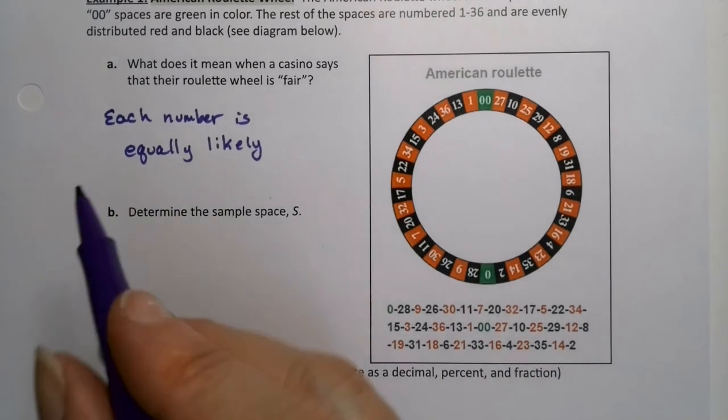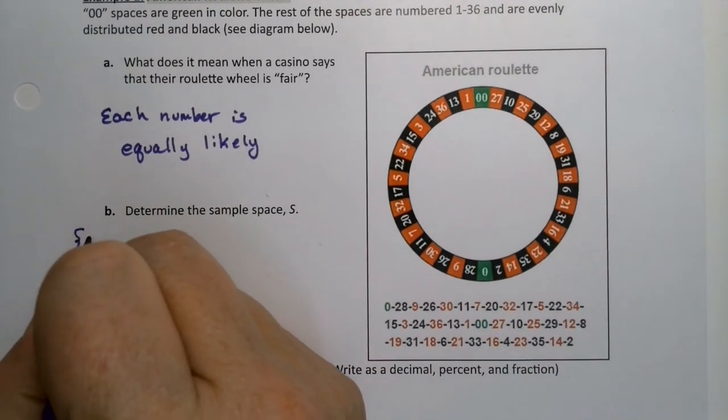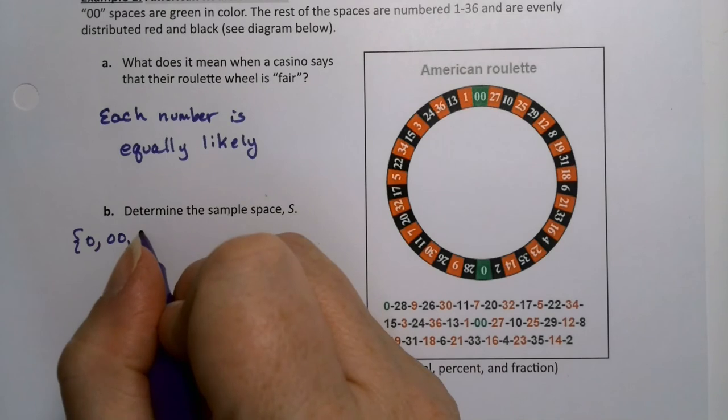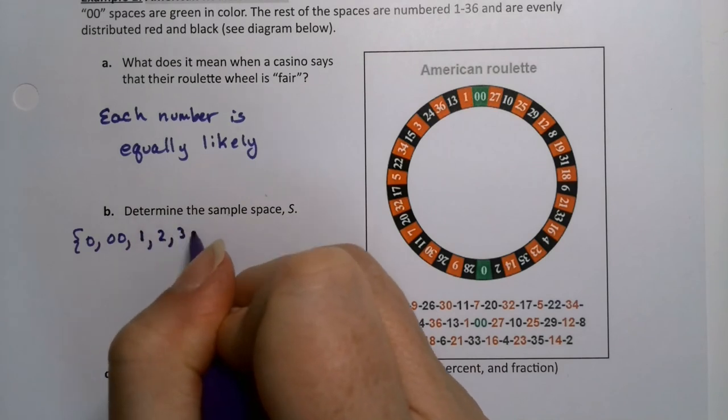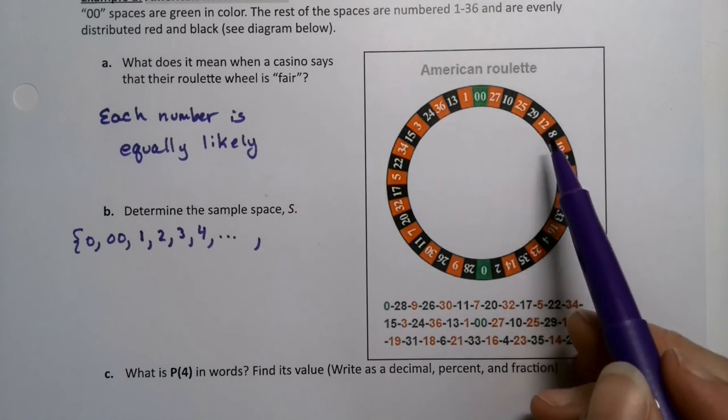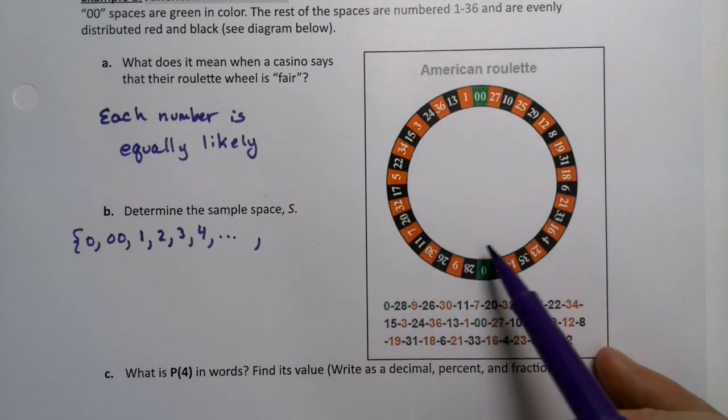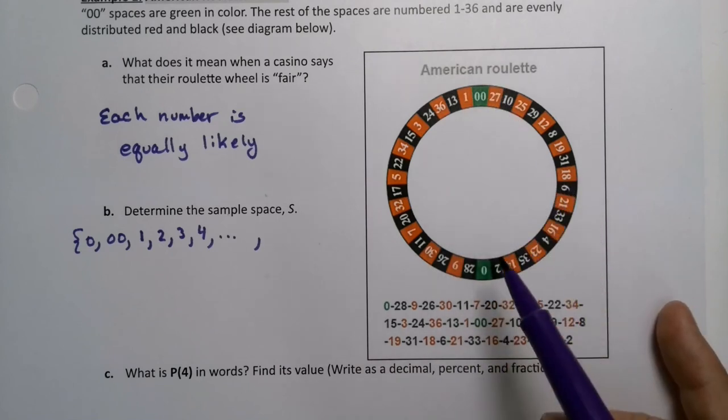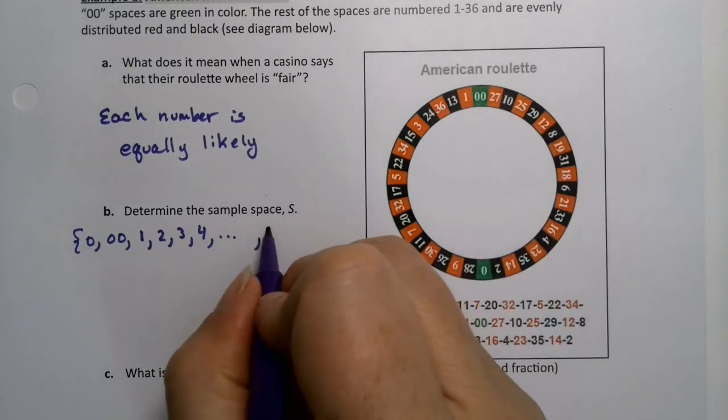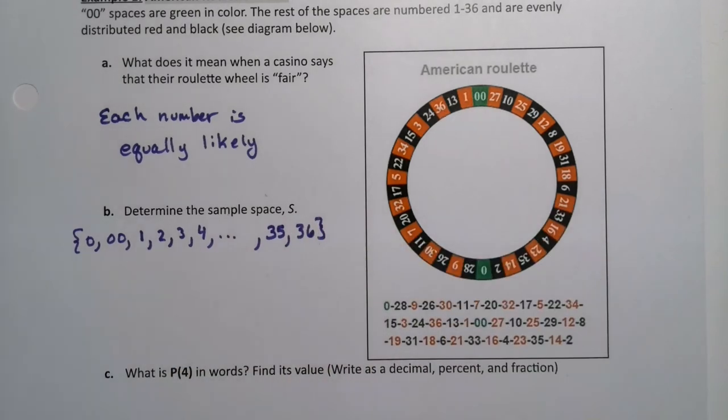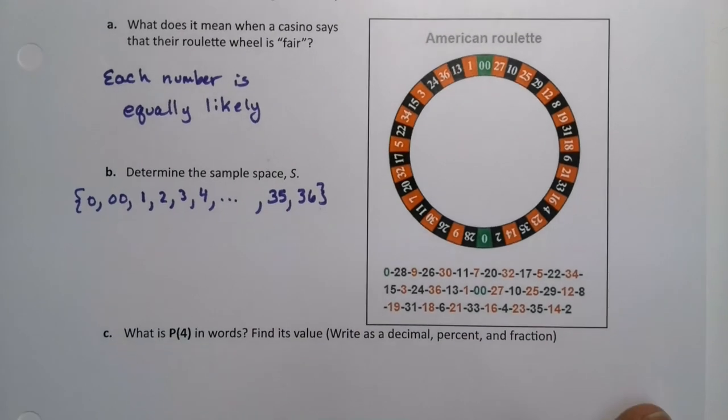The sample space, I'm not going to write them all out because it's annoying. There's a 0, there's a 00, those are the two 0's out of the way. And then it goes 1, 2, 3, 4, all the way up until 36. There's 36 red and black spaces, 18 of each, and then there's the two green spaces. So it goes 35 and 36. 36 is right there in case you want to know.